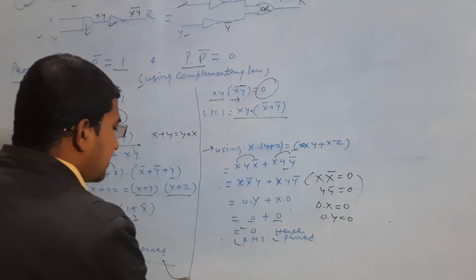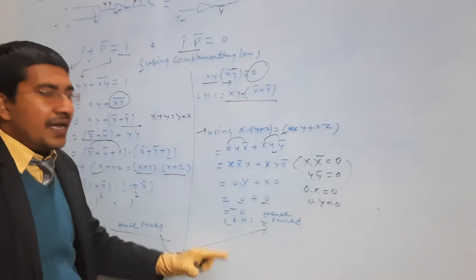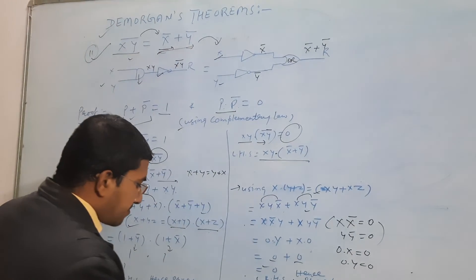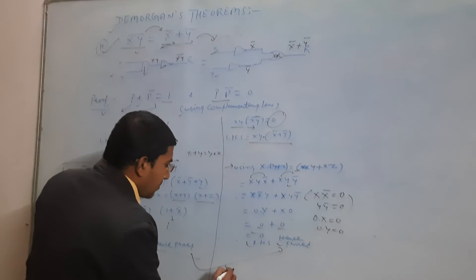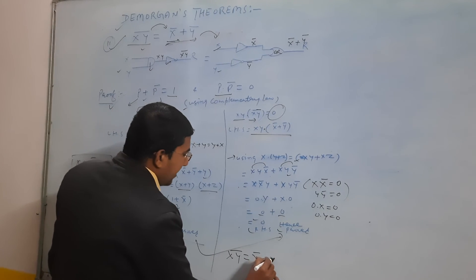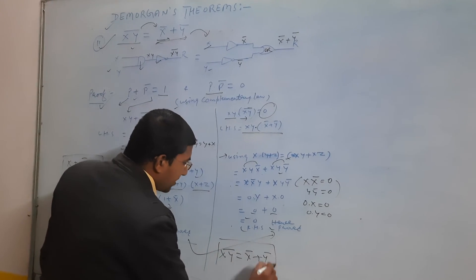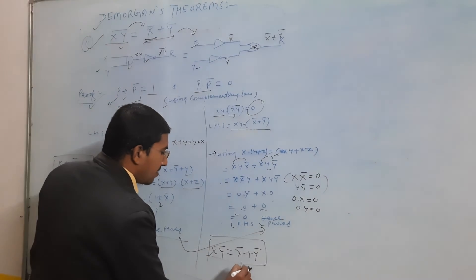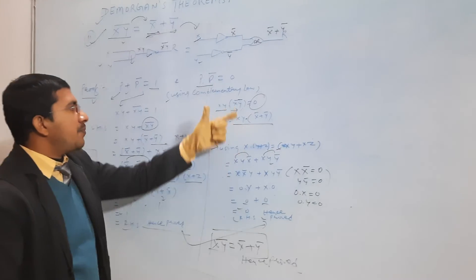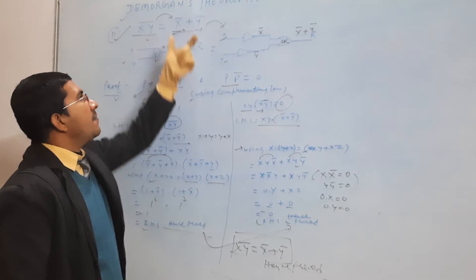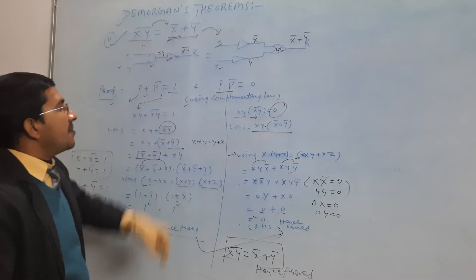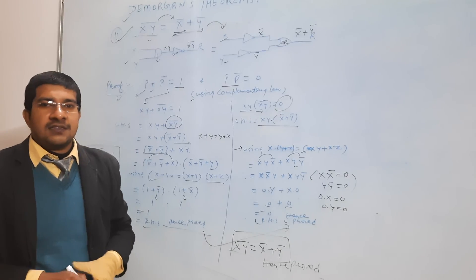Both statement one and statement two are now proved. Hence we can see that (xy)' = x' + y'. This is the proof of De Morgan's second law. We have proved these two statements with respect to this law, hence this theorem is proved. Thank you for watching this video.